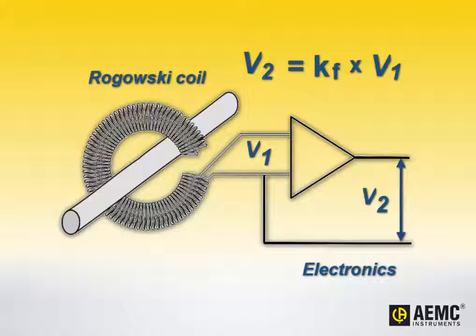For example, the probe can be connected to a digital multimeter or other measurement instrument to calculate and display the current reading based on the input voltage and scale factor.